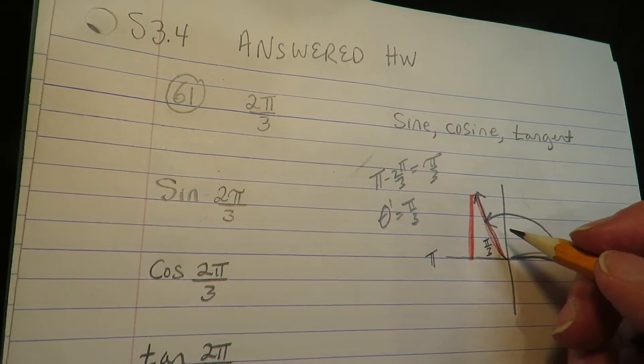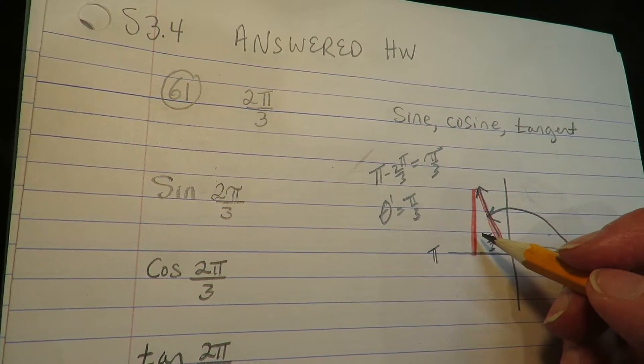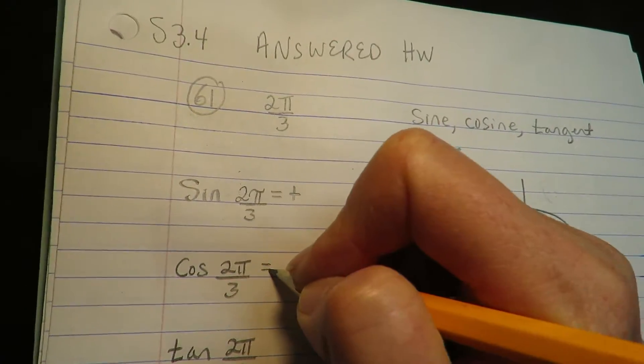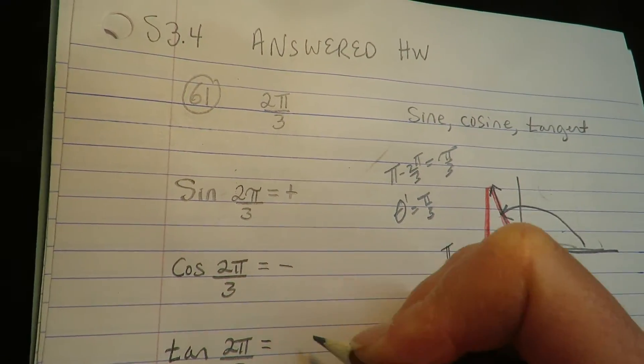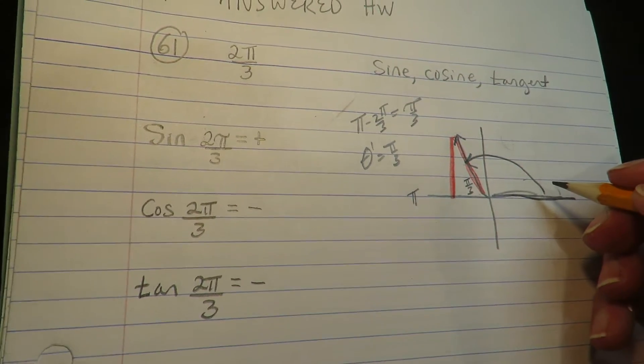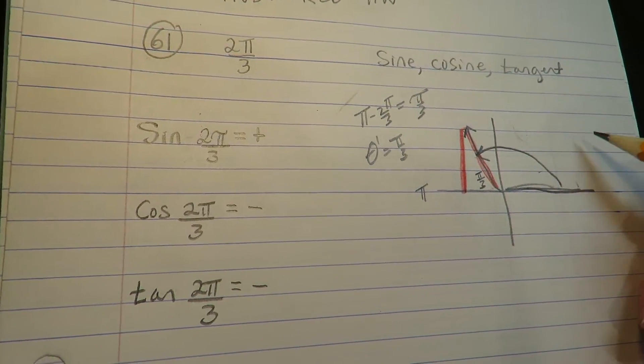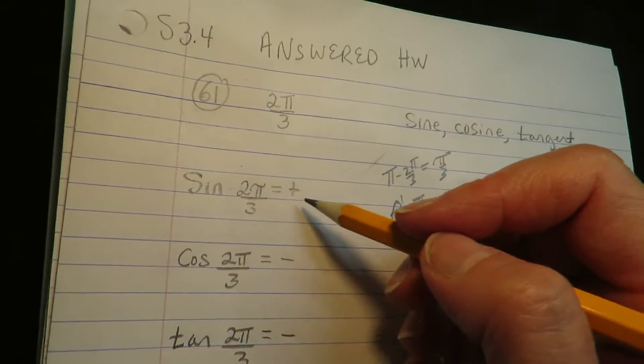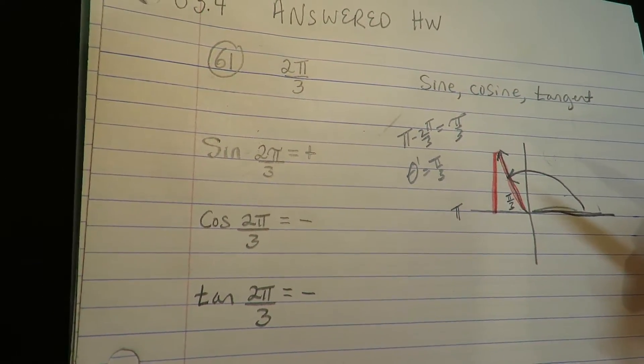Alright, so π/3 is the reference angle. And in quadrant 2, the sine is positive, the cosine is negative, and the tangent is negative. I showed you guys that in the lecture, so you need to either memorize that—use 'all students take calculus,' however you do it. For quadrant 2, those are the pluses and minuses.